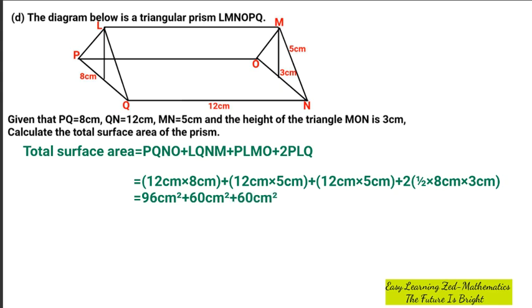And then we're going to simplify what is inside the brackets. When you simplify, 1 over 2 multiplied by 8 will give us 4. 4 by 3 will give us 12. Then we're going to have 2 by 12 cm squared. Then we're going to start adding.